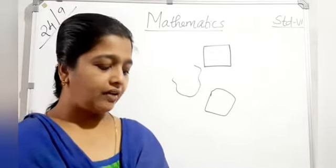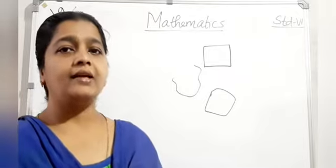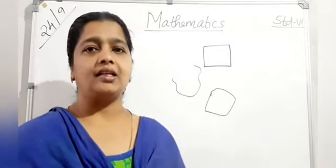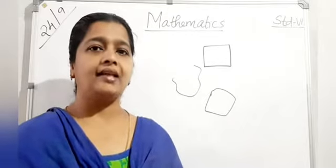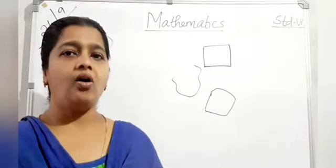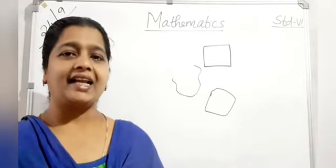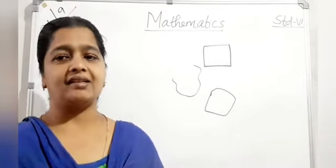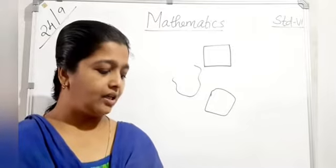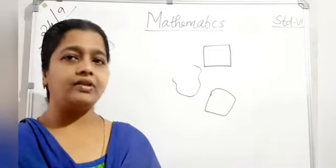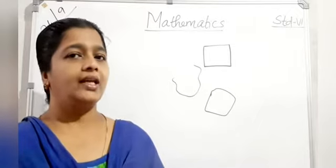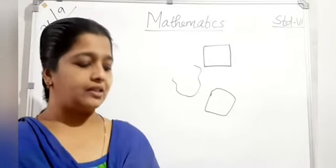Quadrilaterals are classified with reference to their properties. A trapezium has one pair of parallel sides. A parallelogram has two pairs of parallel sides. A parallelogram with four right angles is known as a rectangle. A parallelogram with four sides of equal length is known as a rhombus. A rhombus with four right angles is called a square.